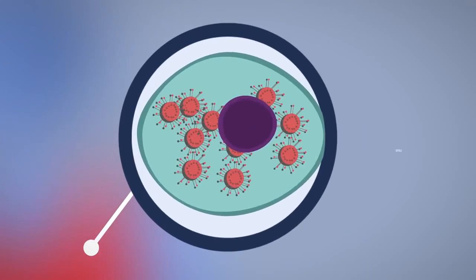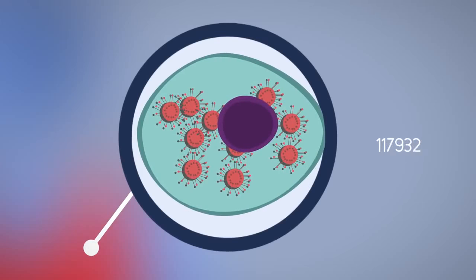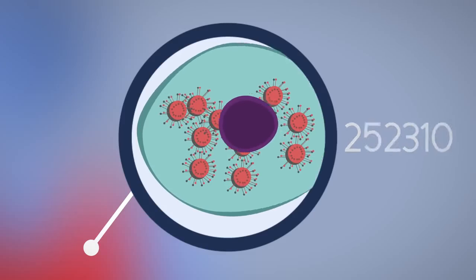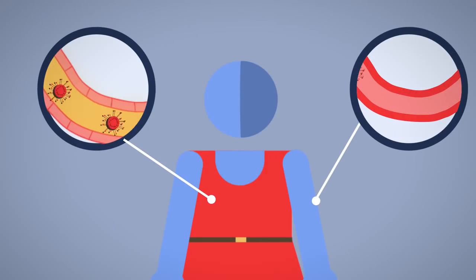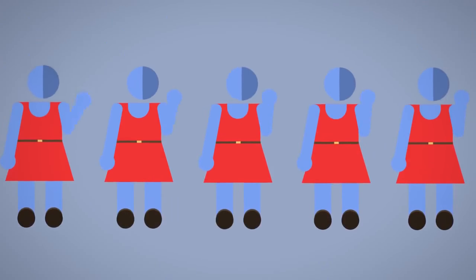They reproduce hundreds of thousands of times and eventually cause the host cell to explode. The virus then passes out through the airways, bloodstream or other routes and can spread through populations.